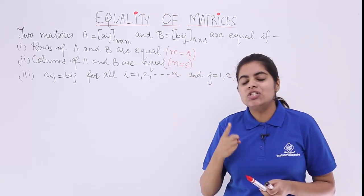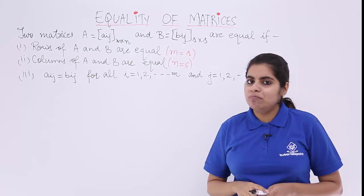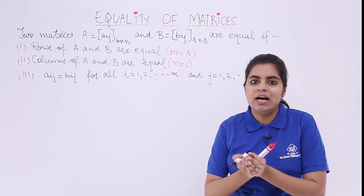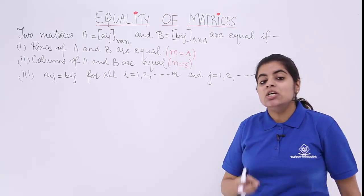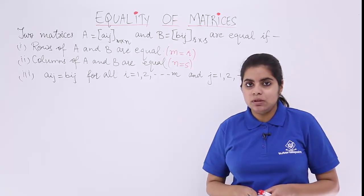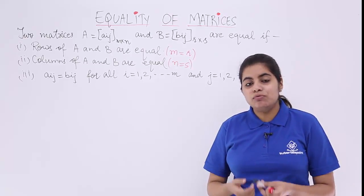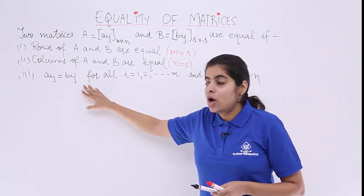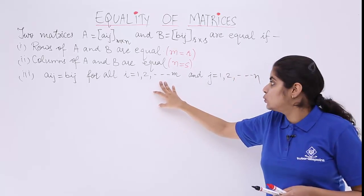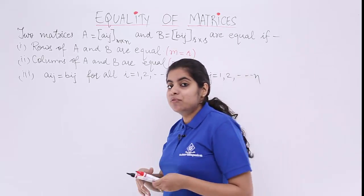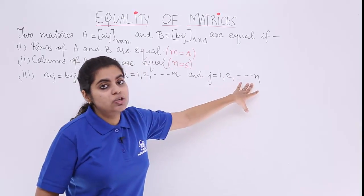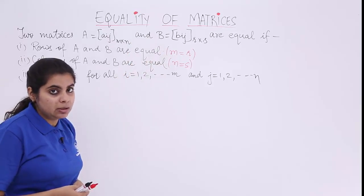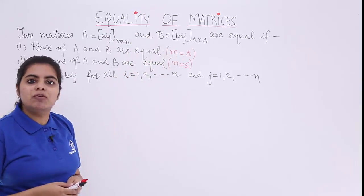Now if these two conditions of rows and columns are equal, that means the order is the same, because rows and columns combined basically mean order. So for two matrices to be equal, their order should be equal. The third condition says that Aij is equal to Bij for all i equal to 1, 2, 3 up to M, and for all j equal to 1, 2, 3 up to N — meaning every element of matrix A should be equal to every element of matrix B.